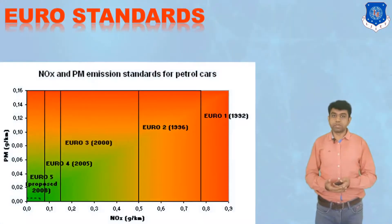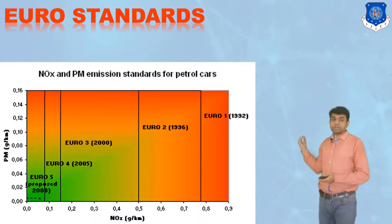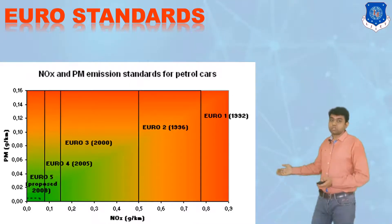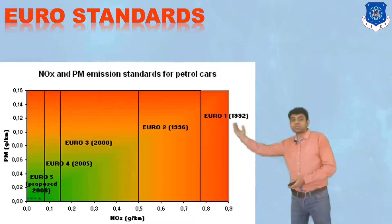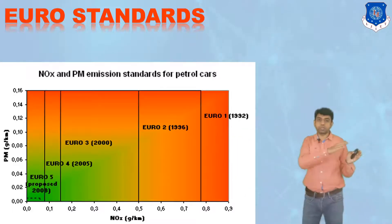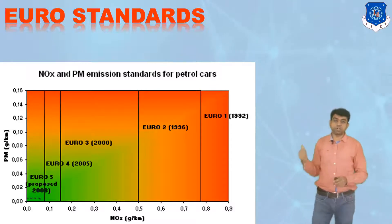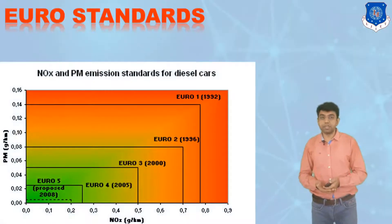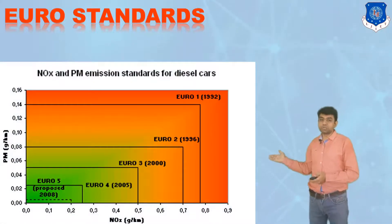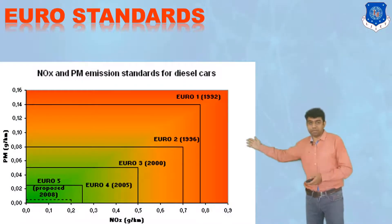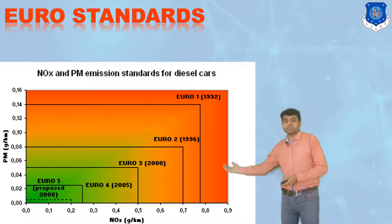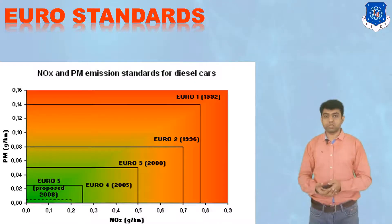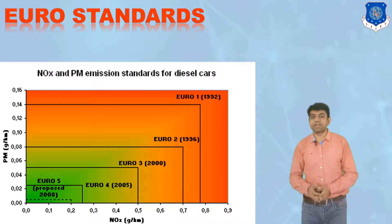Let us have a look at this with the help of a chart. From this particular graph, you can easily remember the different values. From the Euro 1 norms to the Euro 6 norms, you can see this particular graph has been shrinking. This is for the particulate matter and the NOX emission for petrol cars. If you look at the diesel car, in which both particulate matter and NOX values are shown, the graph appears similarly — again shrinking as Euro 6 norms are applied. Further, in future we will also have Euro 7 norms, so again more stringent criteria can be observed.